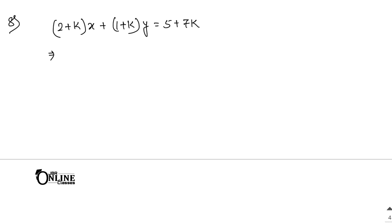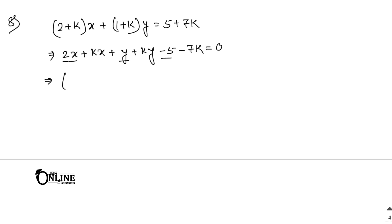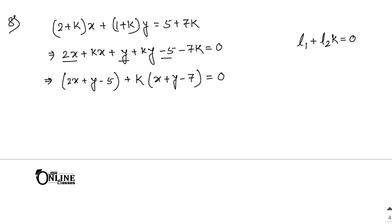So first, move 5 and 7k to the left-hand side. So here 2x plus kx, then y plus ky minus 5 minus 7k equal to 0. Now you can write: 2x plus y minus 5 in a bracket, and from the remaining terms, if you take k common, it becomes x plus y minus 7 in another bracket, equal to 0. This equation looks like L1 plus L2 times k equal to 0. By comparing, L1 is 2x plus y minus 5 equal to 0, and L2 is x plus y minus 7 equal to 0.